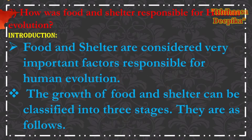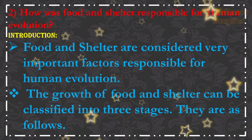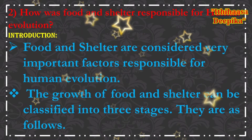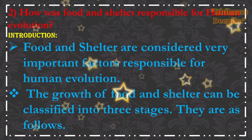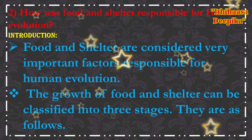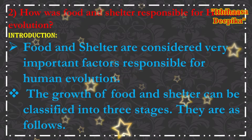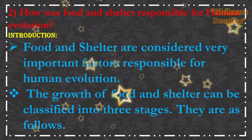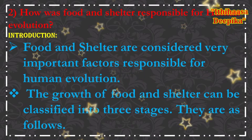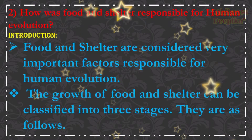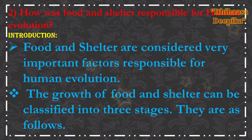Question number 2: How was food and shelter responsible for human evolution? Food and shelter are considered very important factors responsible for human evolution. The growth of food and shelter can be classified into three stages relating to human evolution.